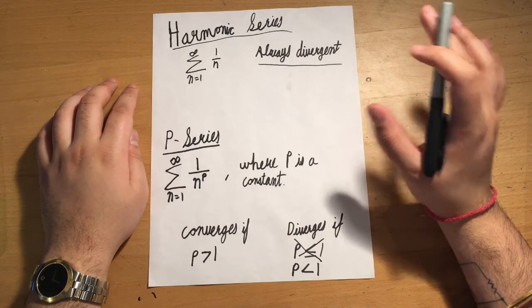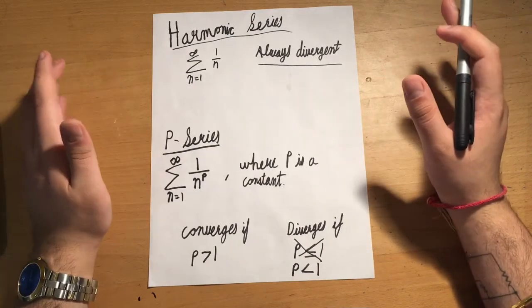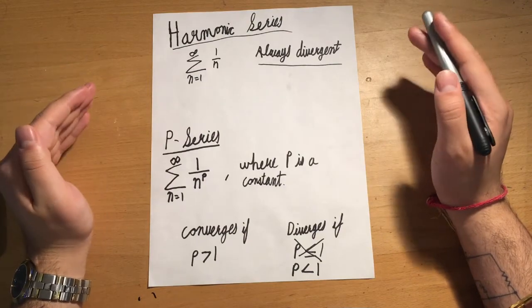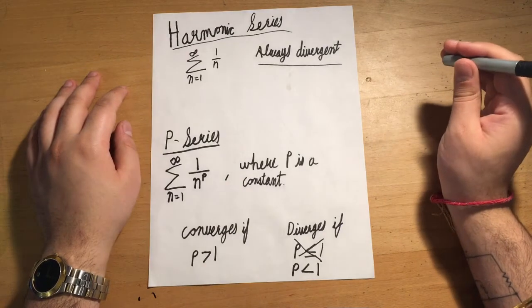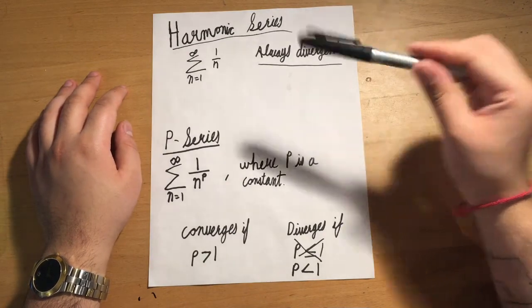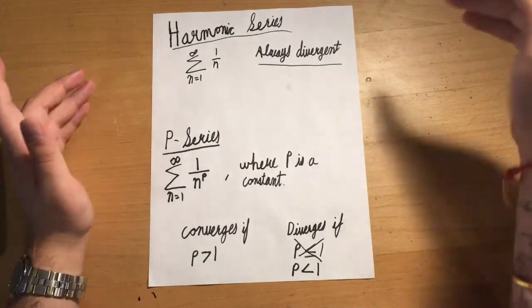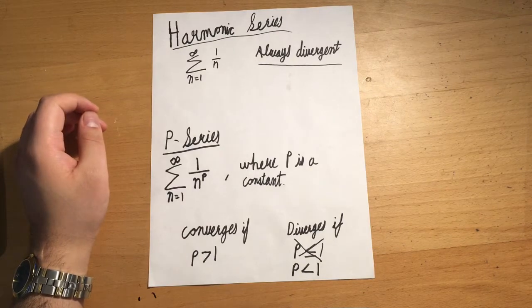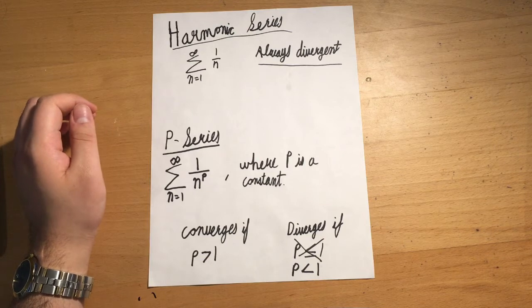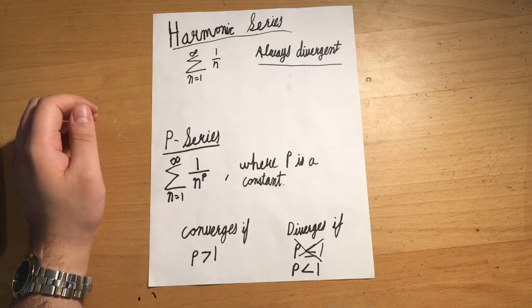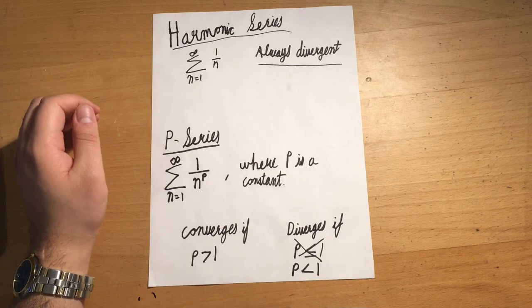In this video, we're going to go through two specific types of special series and determining when they're convergent and when they're divergent. A common question you'll be asked is, here's an infinite series, does this series converge or diverge? If you're able to narrow down the type of series it is, you can perform specific tests to make that question a lot easier to answer.